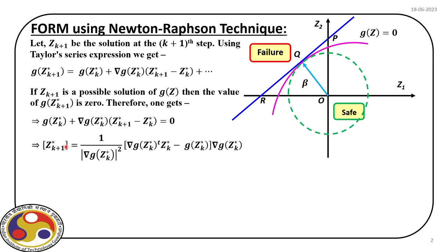The expression for z*_{k+1} has a matrix form requiring linear algebra. The advantage of this representation is that from the solution at the kth step, we can directly find the design point at the k+1th step. We do not need to evaluate beta and direction cosines separately to find the design point at the end of each iteration. Rather, we directly get the updated design point based on the design point from the previous iteration.